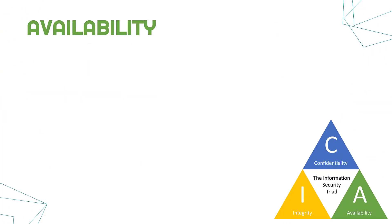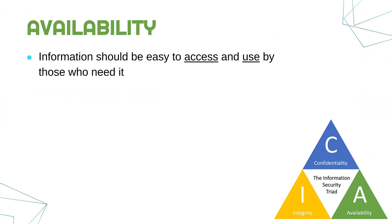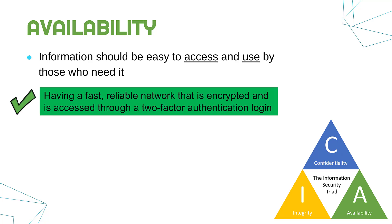The last principle, availability, is maybe the easiest of the three to understand. This is the idea that information should be easy to access and use by those who need it — those who are authorised shouldn't be too limited in accessing information they're allowed to access. Sometimes companies add so much security it makes things almost unusable for authorised users. A good example of doing this well is having a fast, reliable network that is encrypted and accessed through two-factor authentication — that's fairly secure but not a big barrier. Anyone can log in and it's still keeping things confidential.